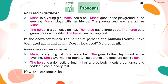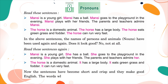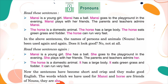Now, the sentences have become short and crisp and they make good English. The words which we have used for Mansi and horse are friends of nouns. They are: she, her, and it. These words are known as pronouns.